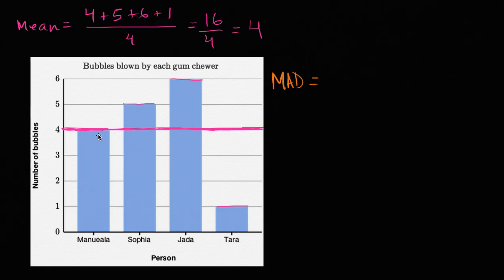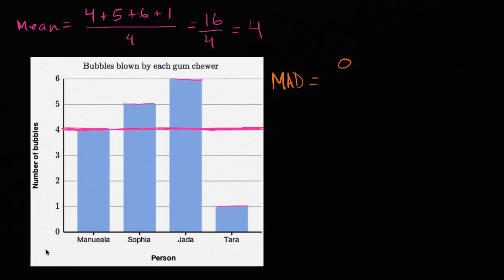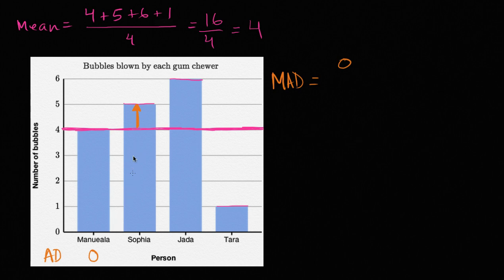I know I just used the word 'mean' twice in a sentence, so it might be a little confusing, but as we work through it, it'll make sense. How much does Manuela's number of bubbles deviate from the mean? Well, Manuela blew four bubbles and four is the mean, so her absolute deviation from the mean is zero. Now let's think about Sophia. Sophia deviates by one from the mean — she's one above. We say one whether it's one above or below, because we're taking the absolute deviation. So Sophia's absolute deviation is one.